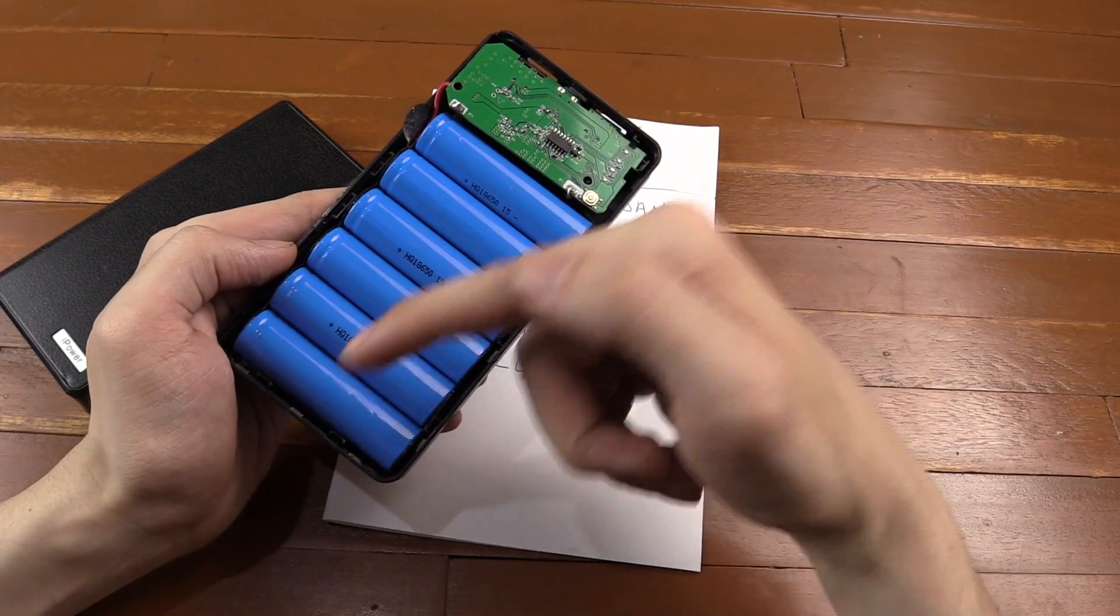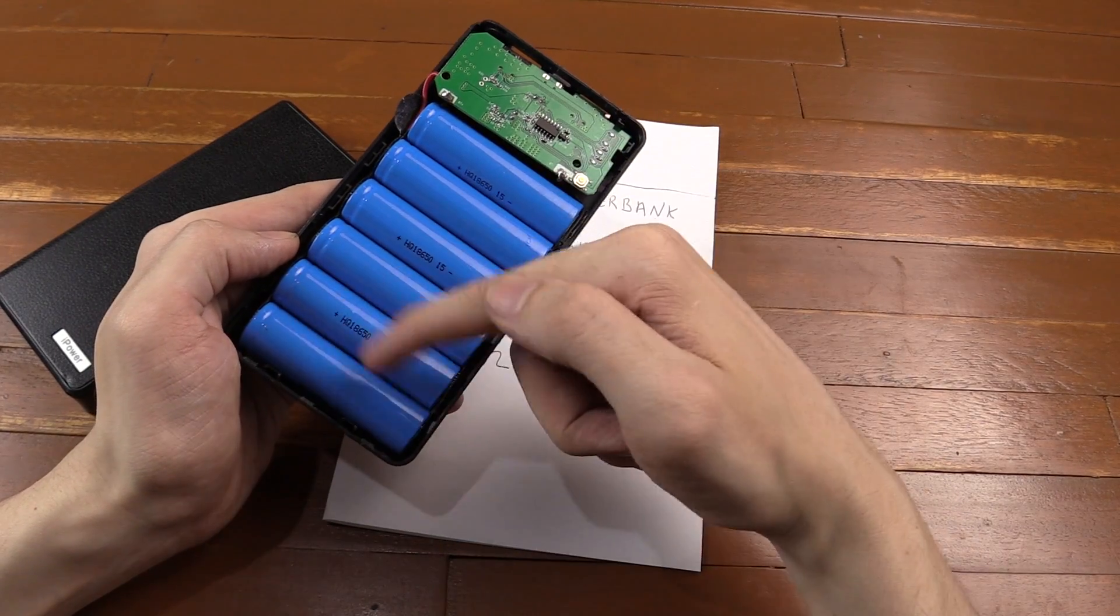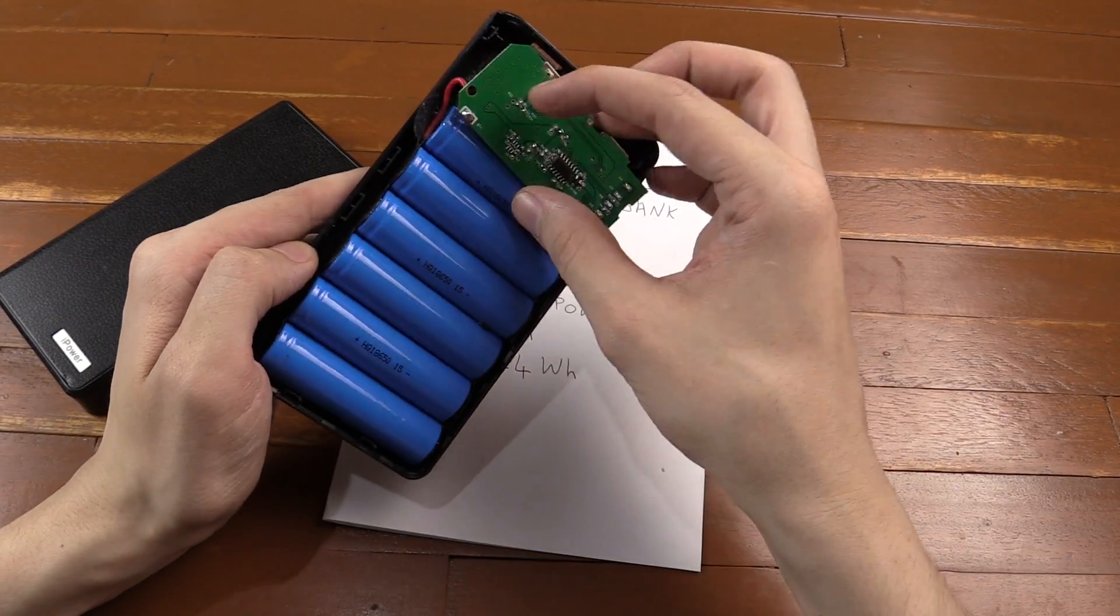And if you're curious, this is what it looks like on the inside. We have 6 battery cells. These are 18650 batteries, and then the charge board here.